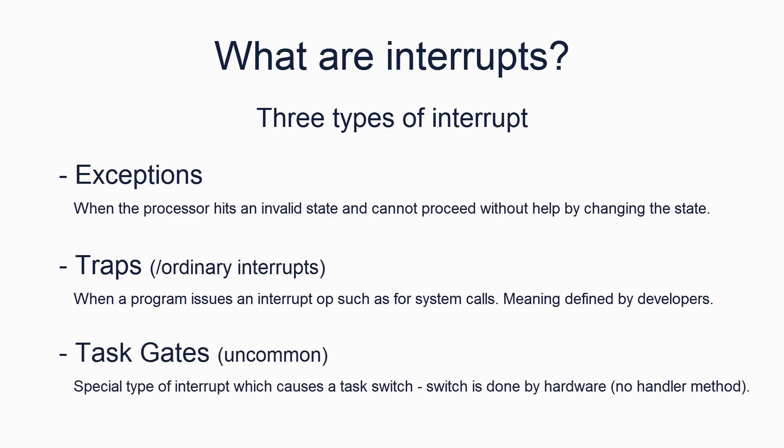The third type is often known as task gates. They are something special. A task gate causes the hardware to perform a task switch before the interrupt is handled. There are many debates over whether task gates should or shouldn't be used, with arguments focusing on speed and energy efficiency. For now though, our OS is so basic that we don't need task gates because we only have one process, i.e. only one task.